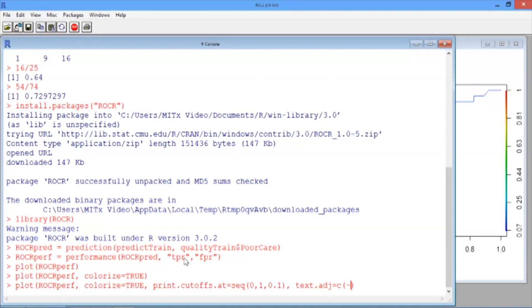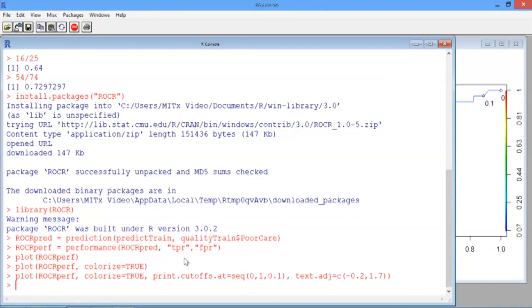And then the final argument is text.adj equals c, and then in parentheses, -0.2, 1.7, and hit Enter.